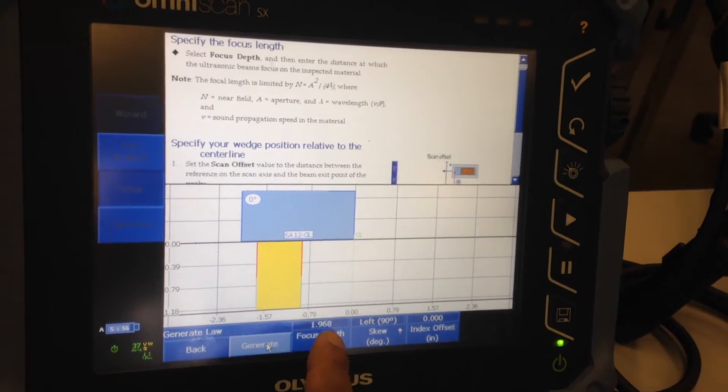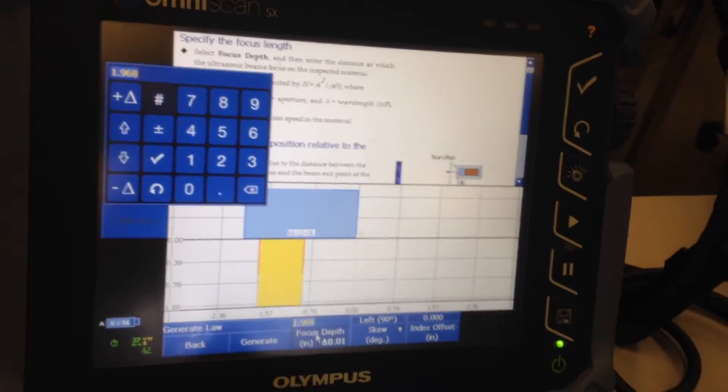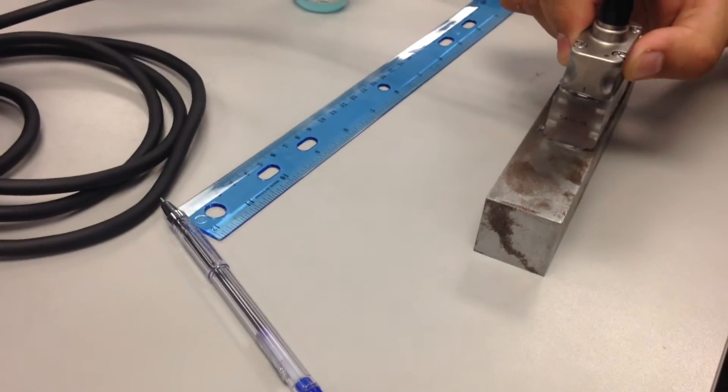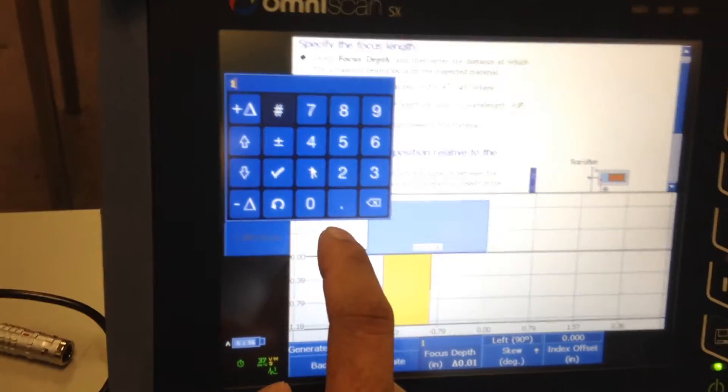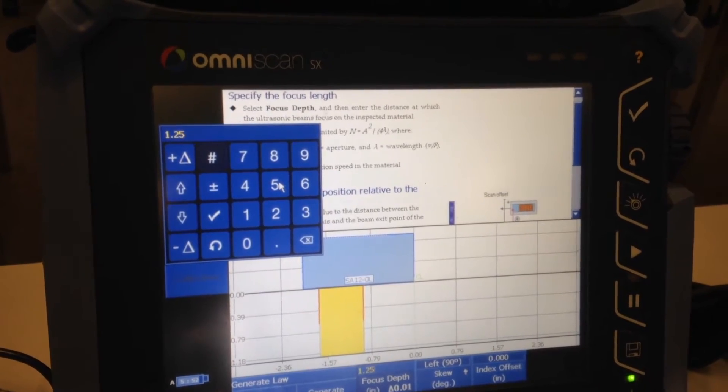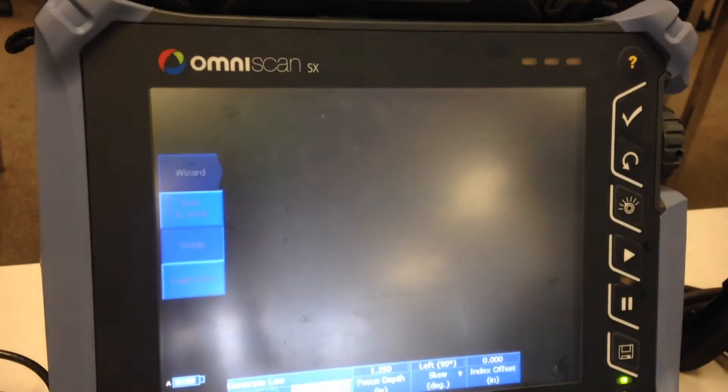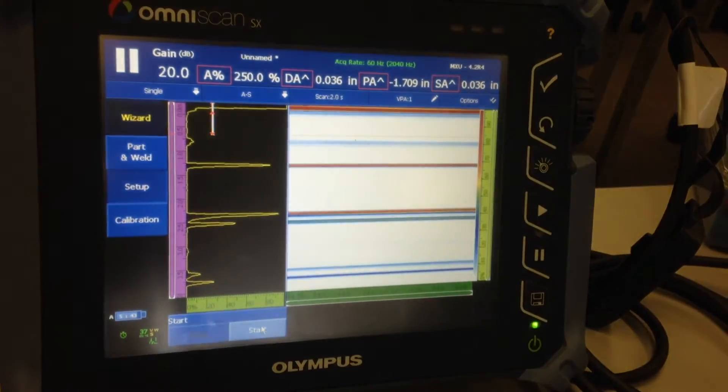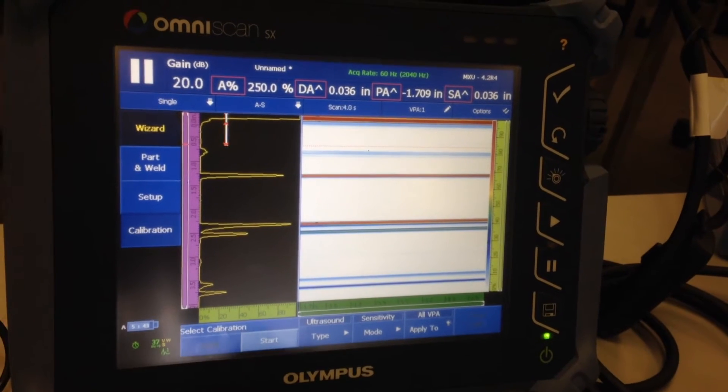Focus step. I want to set my focus step sound beam to focus at the thickness of my calibration block, so leave it on 1.25 and then click generate. Next, I move to calibration once I set my focal laws.